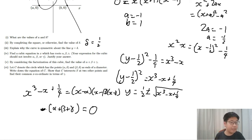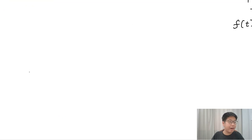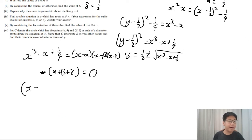Let's denote the circle which has the points alpha delta and beta delta as ends on the diameter. Write down the equation of c. The equation of c is given by x minus the average of alpha and beta. It is given by the formula alpha plus beta over 2 squared plus y minus half squared equals beta minus alpha over 2 squared.